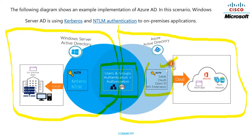On both platforms — local on-premises Active Directory or Azure Active Directory — we will have users and groups, and for those users and groups we need authentication and authorization. The mechanism can be different: in Windows Server Active Directory the authentication mechanisms are Kerberos and NTLM, while Azure Active Directory uses SAML, OAuth, OpenID, and WS-Federation.